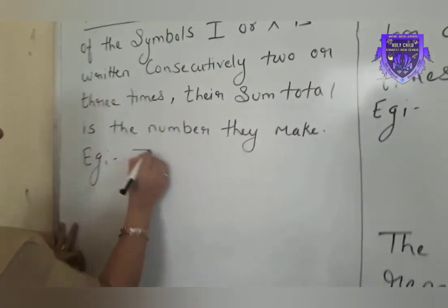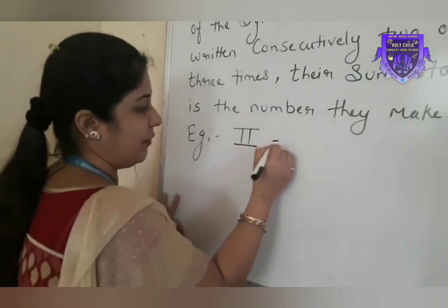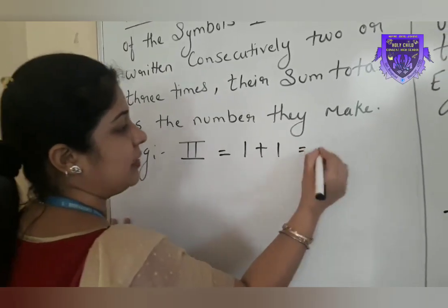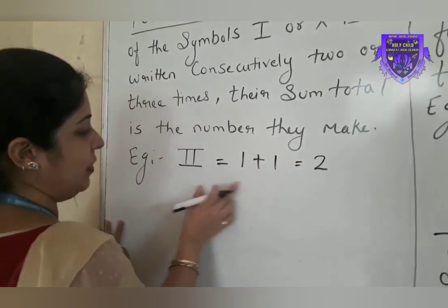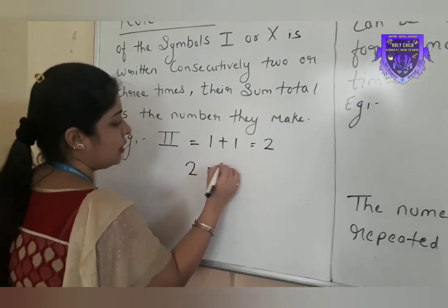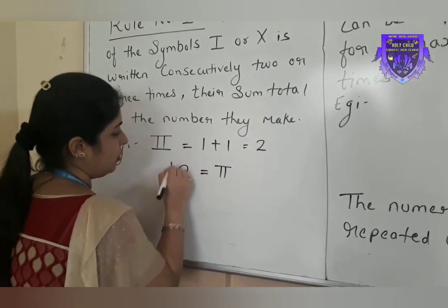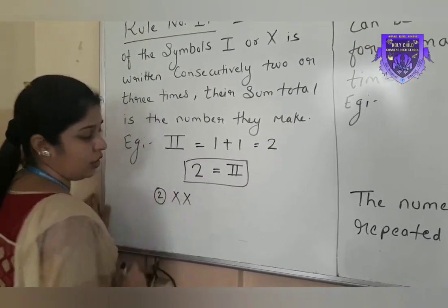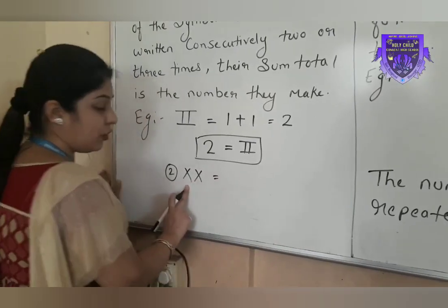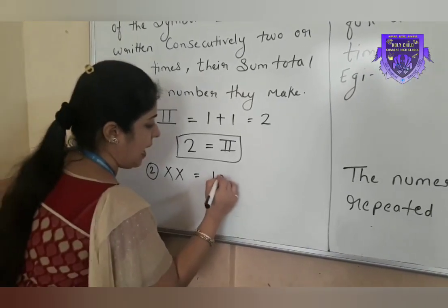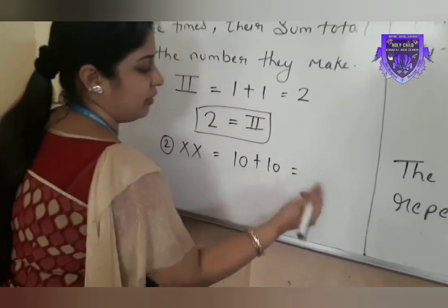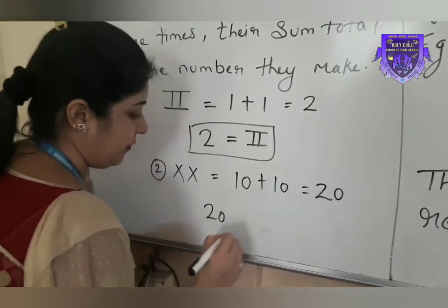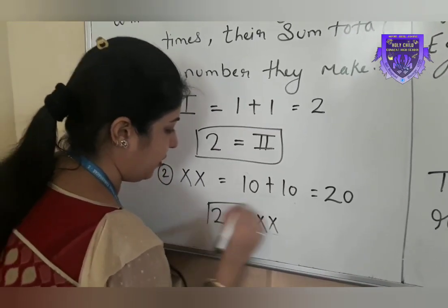Let's see the example. Suppose I am writing I two times. I have to add up the value of I, means that is 1 two times, and the sum total — the total that I get — will be the number. That means 2 is written like this in Roman numerals. Example 2: suppose I am writing X two times. The value of X is 10. I have to add 10 two times — this gives me the value 20. That means 20 will be written like this in Roman numerals.